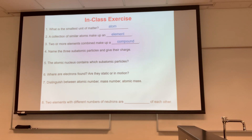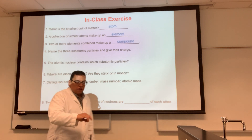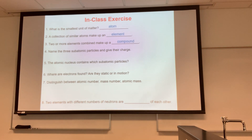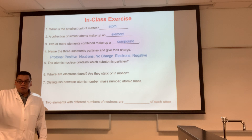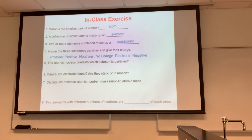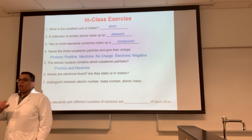Name the three subatomic particles and give their charge. One is the proton — positive charge. The other is the neutron — no charge. The third is the electron — negative charge. Since you already know that, you don't have to study it anymore. The atomic nucleus contains protons and neutrons. Where are the electrons? Around the nucleus — and they're always in motion.